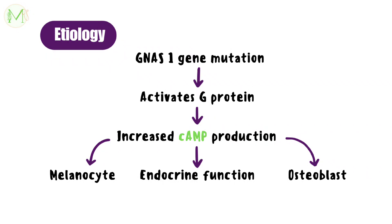GNAS1 gene mutation occurs which activates G-protein. G-protein is basically involved in cyclic AMP production. Since G-protein is activated, there is increased production of cyclic AMP. This in turn causes dysfunction of melanocyte, endocrine function, and osteoblast.